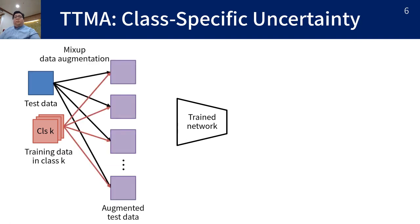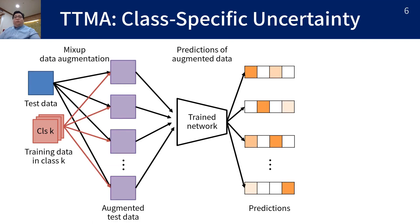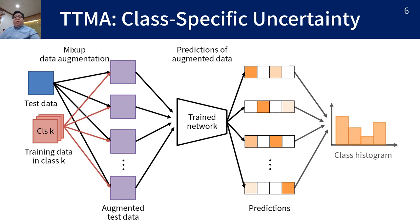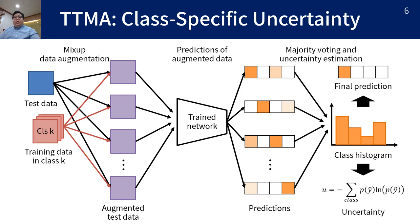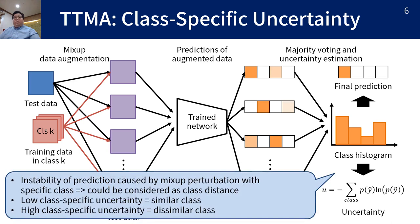In addition to test time mixup augmentation for entire class data, we can perform mixup with one specific class, which we call the class-specific uncertainty. The class-specific uncertainty indicates the instability of prediction caused by a mixup with one specific class. We hypothesize that this uncertainty can be considered as class similarity: if two classes are close in feature space, their mixup perturbation is weak so the class-specific uncertainty would be low, and if two classes are far in feature space, their mixup perturbation is strong so the class-specific uncertainty would be high.